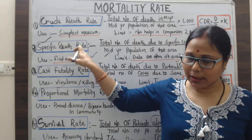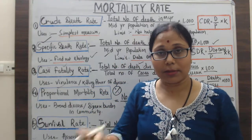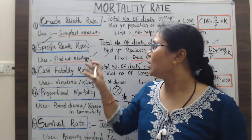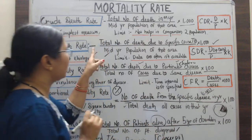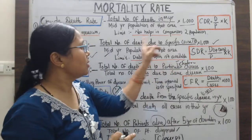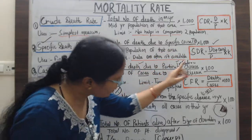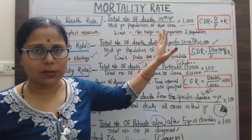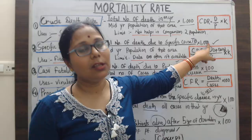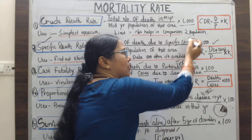To resolve this, we have the specific death rate. 'Specific' indicates we are calculating deaths due to a specific disease. The formula is: total number of deaths due to a specific cause — for example tuberculosis — divided by the median population of that area, multiplied by 1000, similar to the crude death rate formula.